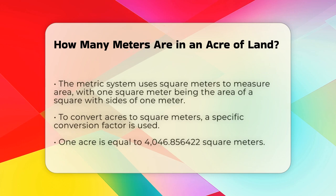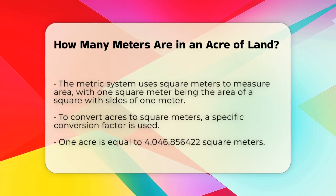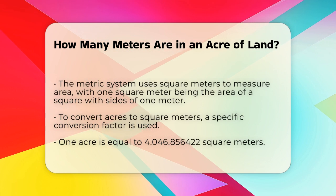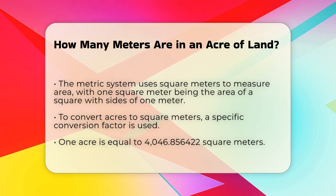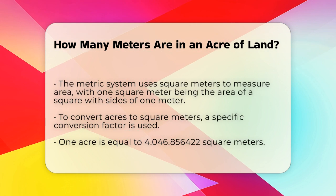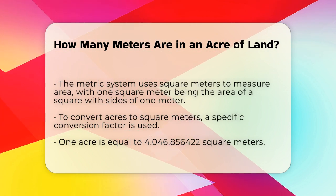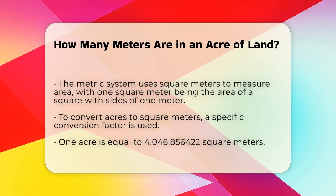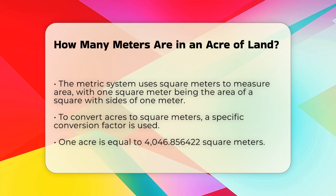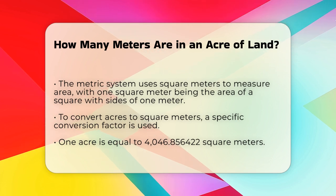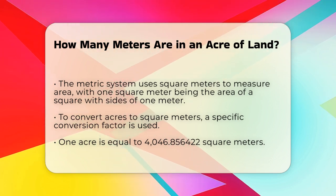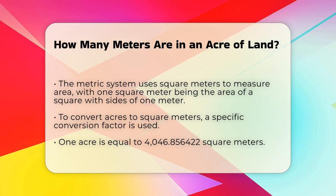Now, let's convert this to the metric system, which uses square meters to measure area. A square meter is the area of a square with sides that are each one meter long. To convert acres to square meters, you need to know the conversion factor: one acre is equal to 4,046.856422 square meters. This might seem like a big number, but it's the key to converting acres to square meters easily.